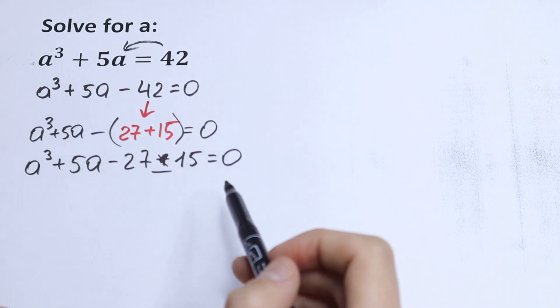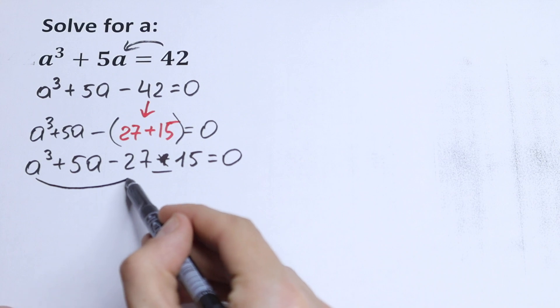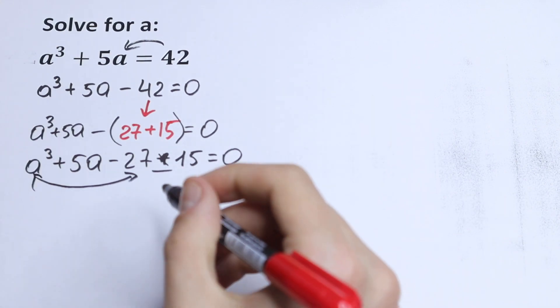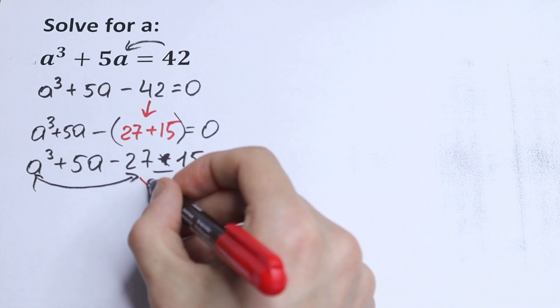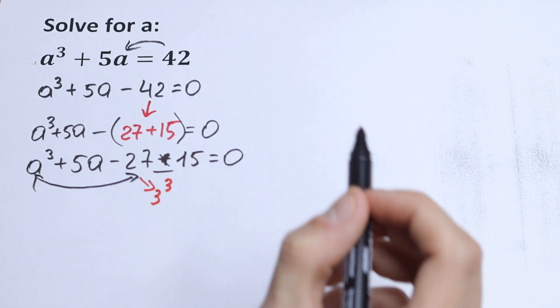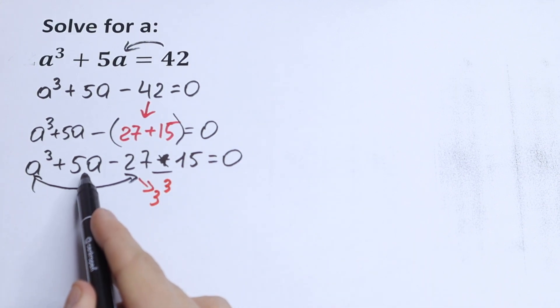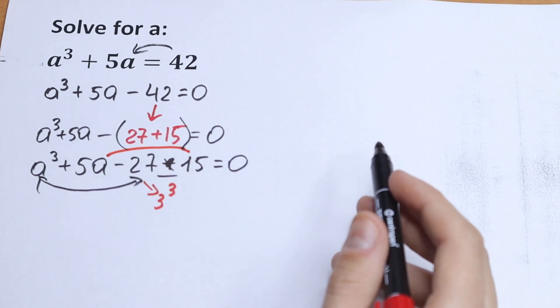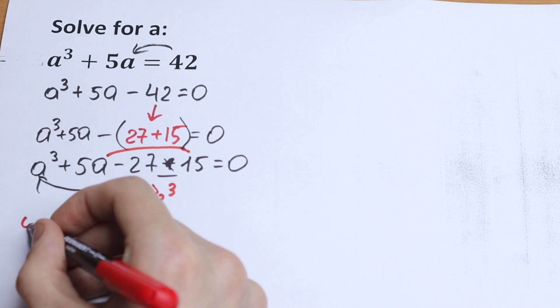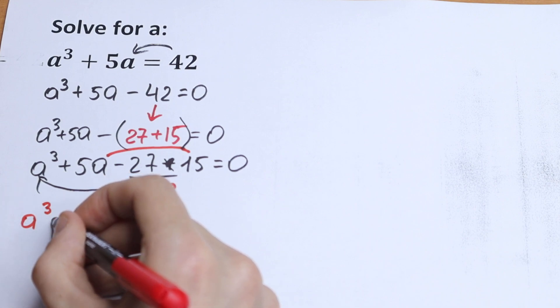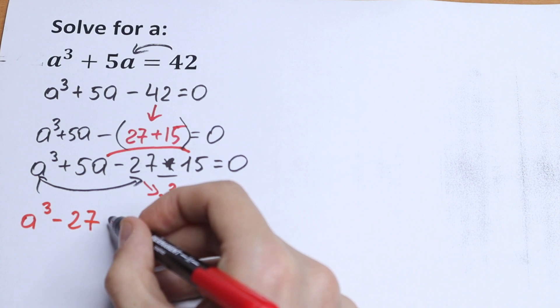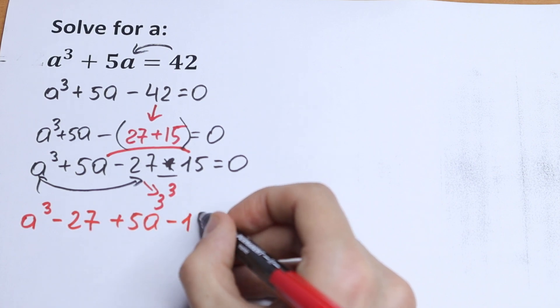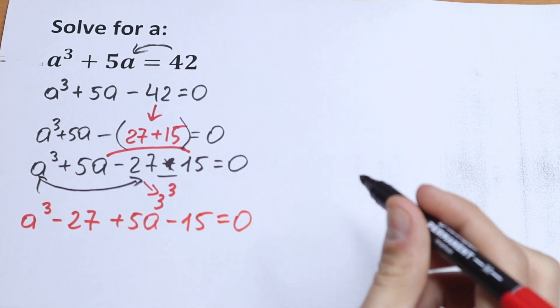What we're going to do next? Of course, let's group this 27 with a³ because we all know that this 27 can be written as 3³. This is our 3³. And this 5a let's group with our 15. So as a result we will have our a³ minus 27 plus 5a minus 15 equal to 0.